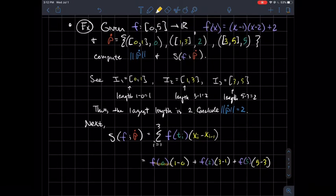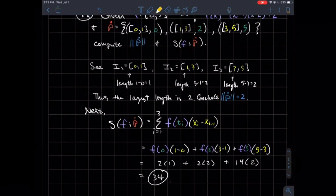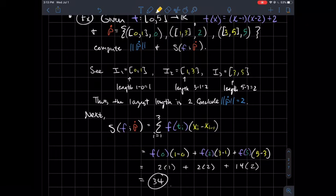And if you plug those numbers in, so I'm saying plug 0 into this formula up here, if you do that I think you get 2, so that'll be 2 times 1. When you plug 2 into this formula up here, you get 2 again, so that'll be 2 times 2. And then finally, when you plug in 5 into this formula, I think you get 14, and that would be 14 times this 2. And when you add those together, I think you get 34. So the value of the Riemann sum of this function f with respect to this partition is 34.